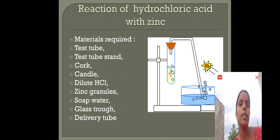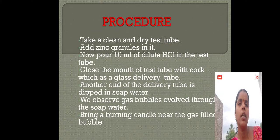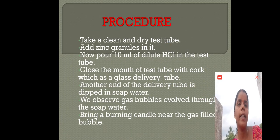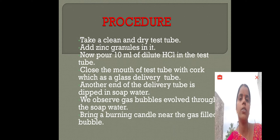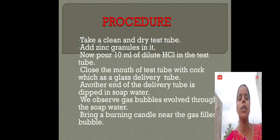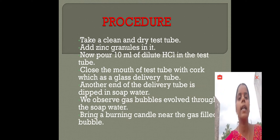Now, what is the procedure? First, we have to take a clean and dry test tube and add zinc granules in it. Then pour 10 ml of dilute HCl into the test tube. Next, we have to close the mouth of the test tube with a cork which has a glass delivery tube.